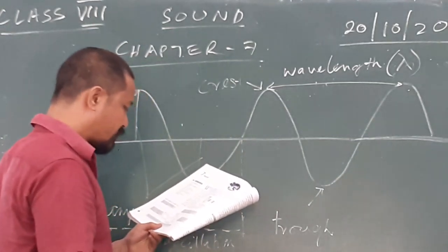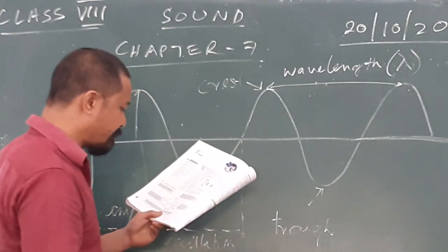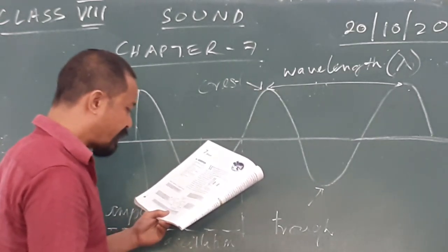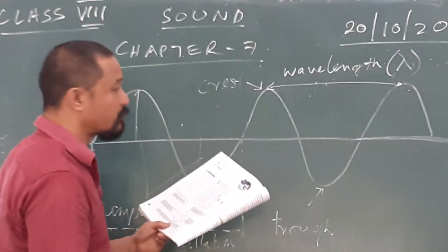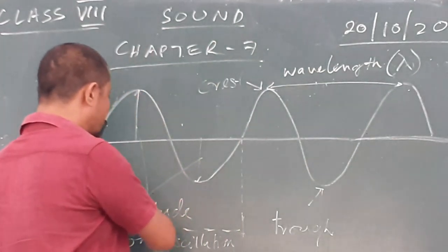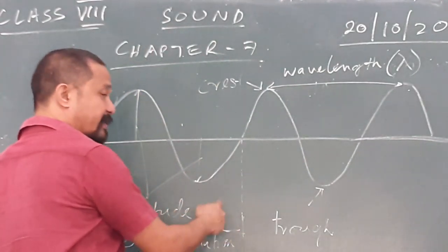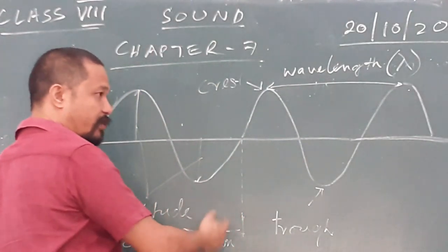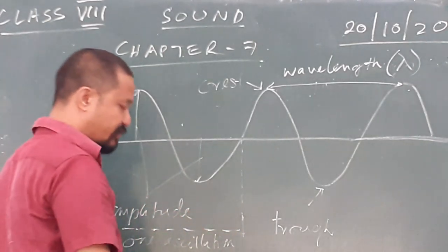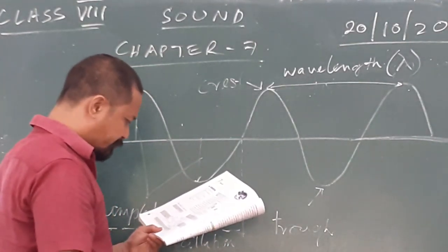What is time period? Time period is the time taken by a wave to complete one oscillation — how much time does it take in seconds, minutes, whatever. So how much time it takes to complete one oscillation is called time period.